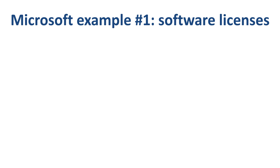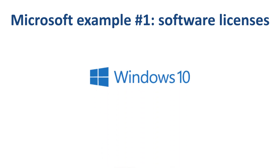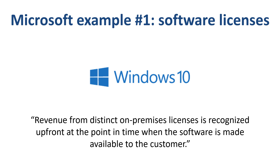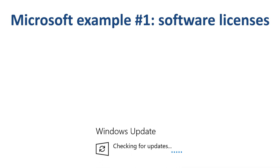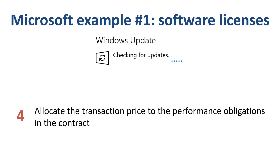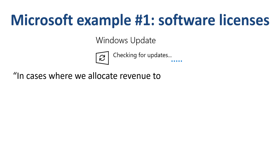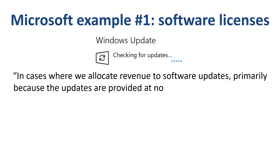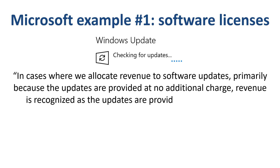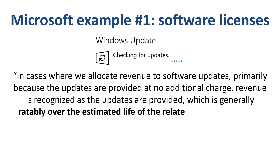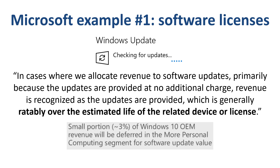So how does revenue recognition work for a software product like Windows 10, which often comes pre-installed on your device when you buy it? Most of this revenue will be recognized upfront, except for software updates. This is where Microsoft had to make a decision on how to interpret step 4 of the revenue recognition process. In cases where we allocate revenue to software updates — primarily because the updates are provided at no additional charge — revenue is recognized as the updates are provided, which is generally ratably over the estimated life of the related device or license. In practical terms, that means 3% of the Windows 10 OEM revenue gets deferred and recognized over the estimated life of the device.